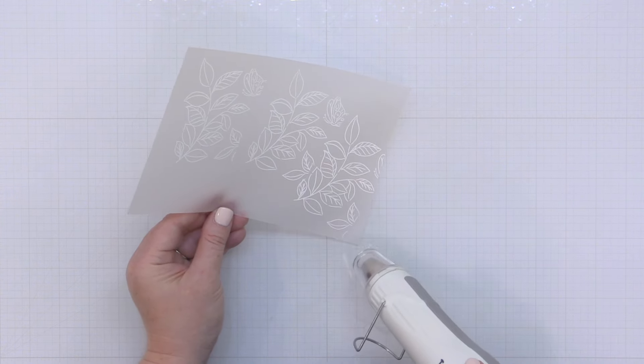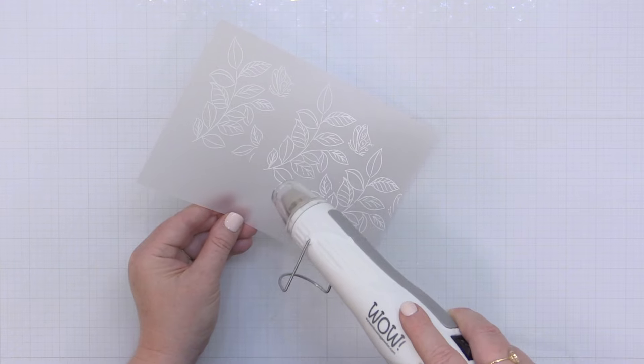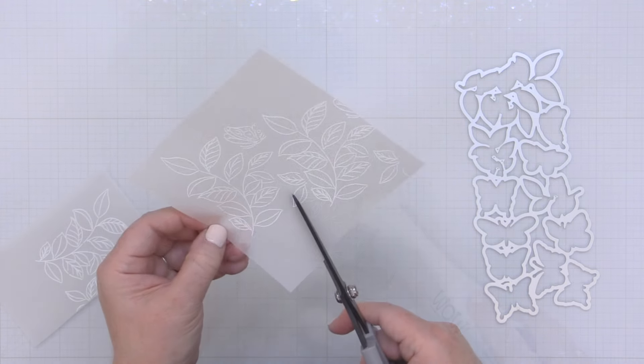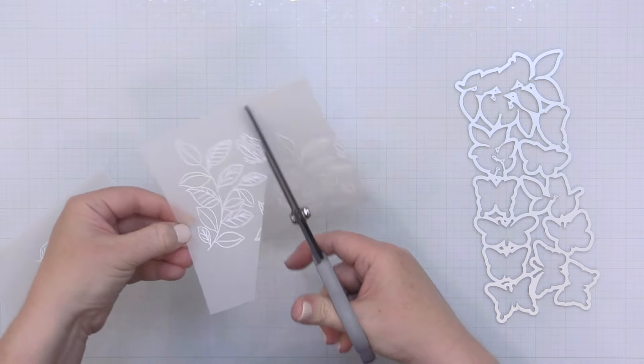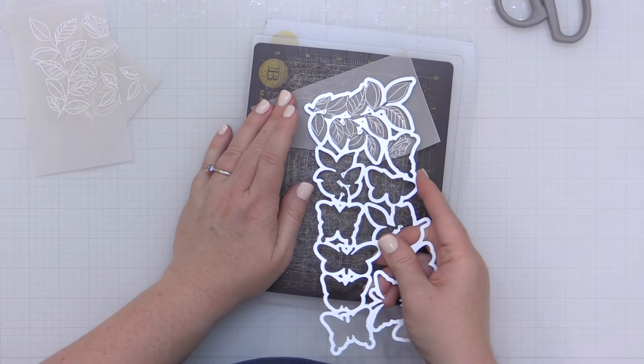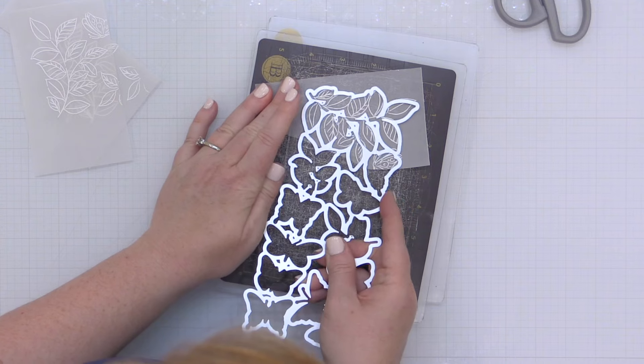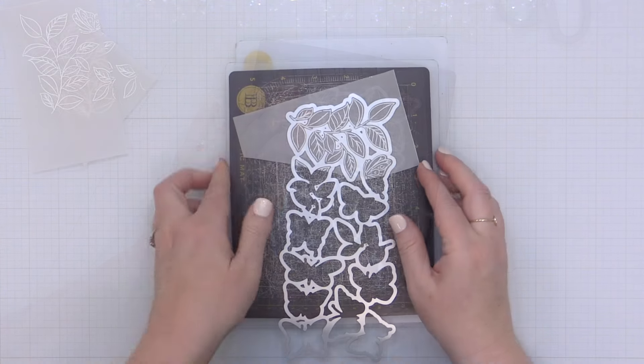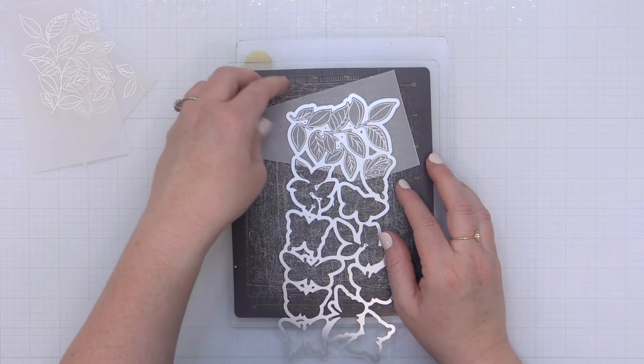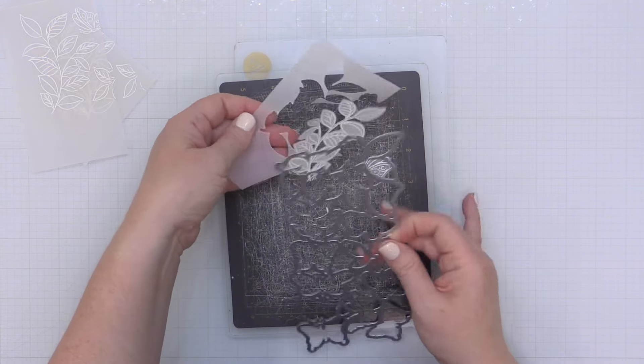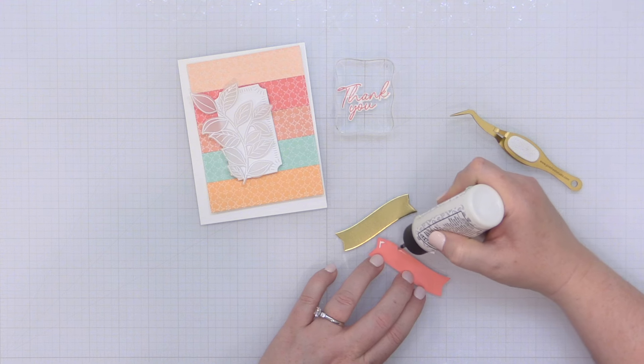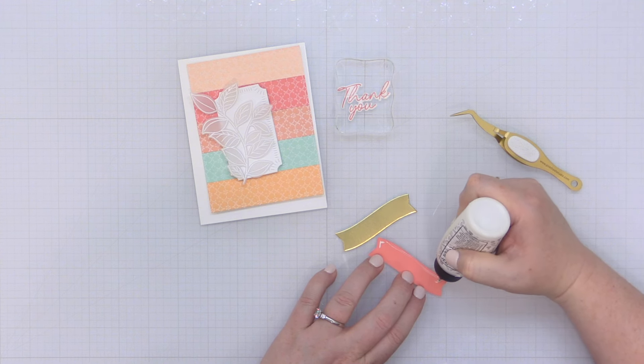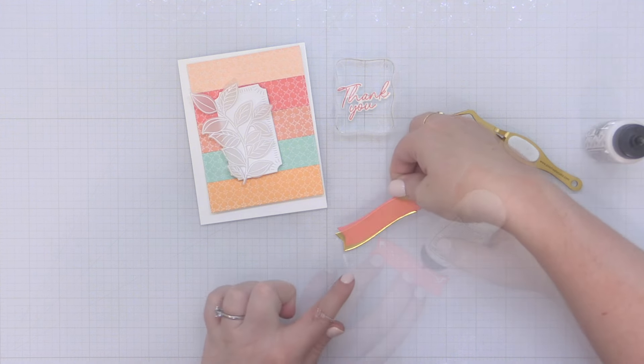I was kind of hesitant to use my Misti stamping tool because this stamp is just a tiny bit long for the Misti and I wanted to make sure that these vines stamped well. So I stamped those three times onto this vellum, heat set those and now I'm taking the coordinating die and lining it up with that vine at the top and die cutting these three leaf elements for my cards. And now it's time to assemble my cards.